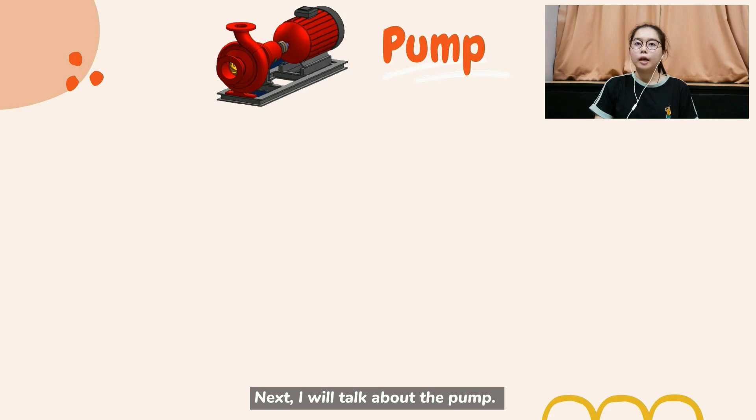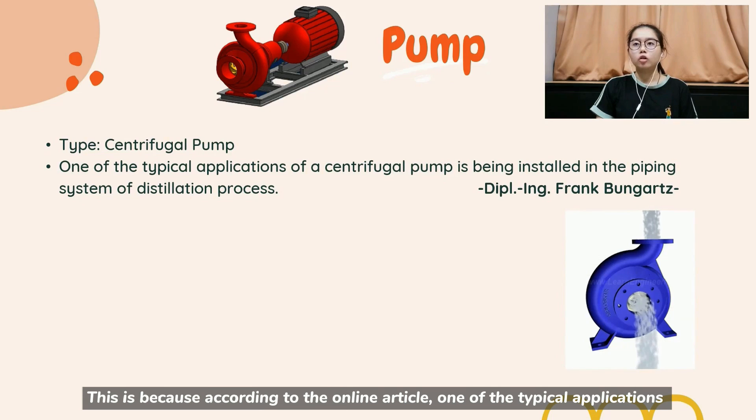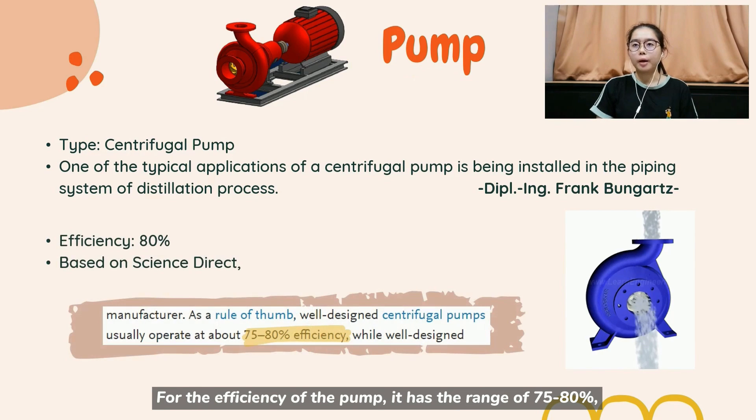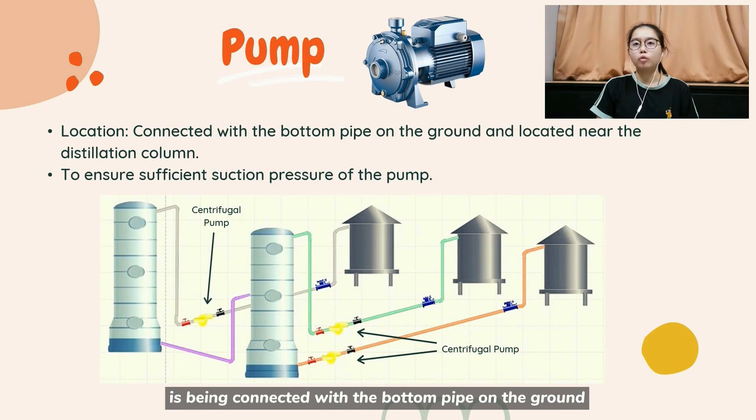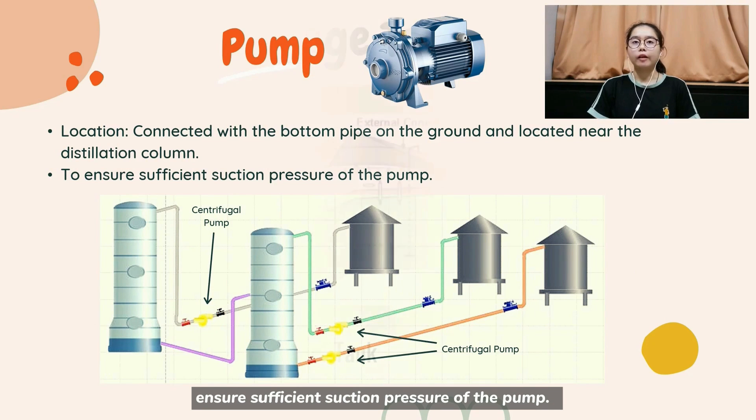Next, I will talk about the pump. In our design, the type of pump that we assume is a centrifugal pump. This is because according to the online article, one of the typical application of centrifugal pump is being installed in the piping system of distillation process. For the efficiency of the pump, it has the range of 75 to 80%, so we assume it to be 80%. Besides that, the centrifugal pump is being connected with the bottom pipe on the ground and located near the distillation column in order to ensure sufficient suction pressure of the pump.